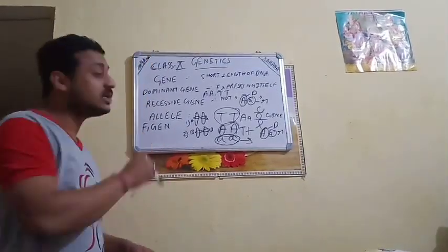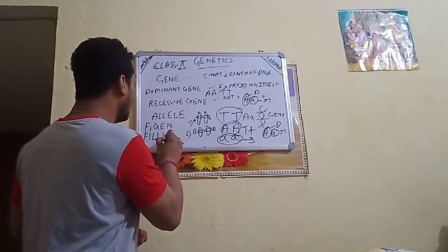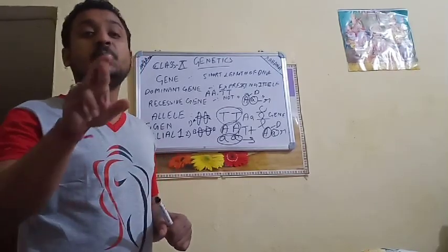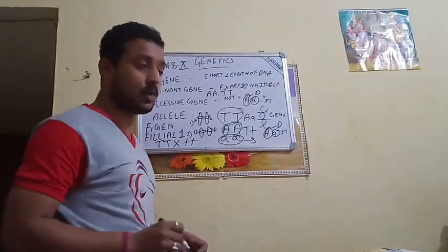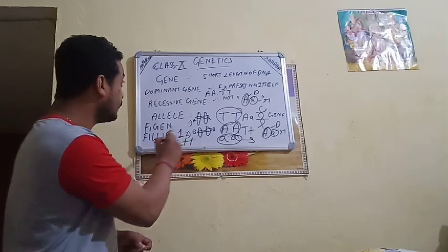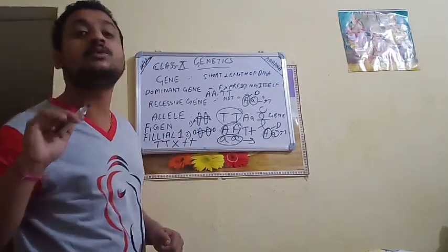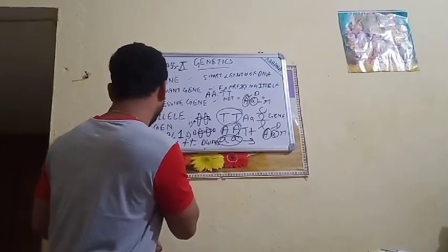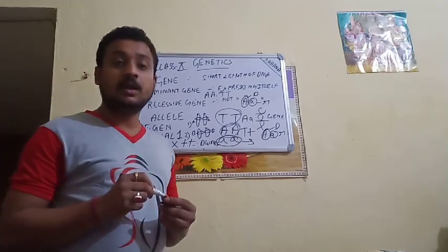Now, F1 generation — Filial 1 generation. Filial 1 generation means the cross between two parents. For example, the cross between a tall parent (capital T, capital T) and a dwarf parent (small t, small t). In biology, especially in genetics, we use the term 'dwarf' rather than 'short'. Tall is always written as tall. So capital T, capital T crossed with small t, small t — this is the F1 generation.